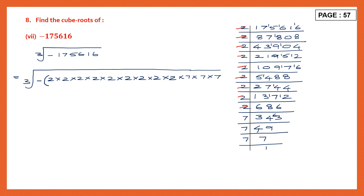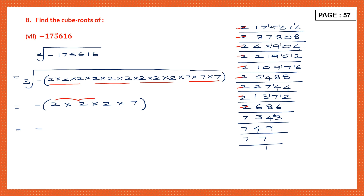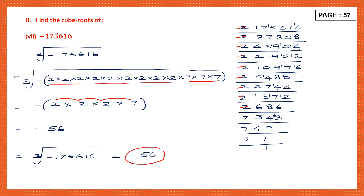Now we'll put them in triplets. Okay, put them in triplets — here we have one set of 2, another set of 2, one more set of 2, and a set of 7. Let's take 1 from each. So minus into 2 into 2 into 2 into 2 into 7. So let's multiply — we have the minus sign there. 2 twos are 4, 4 twos are 8, 8 sevens are 56. So minus 56. So this is our answer — the cube root of minus 1,75,616 is minus 56. That means if you multiply minus 56 three times, you will get back this other number.